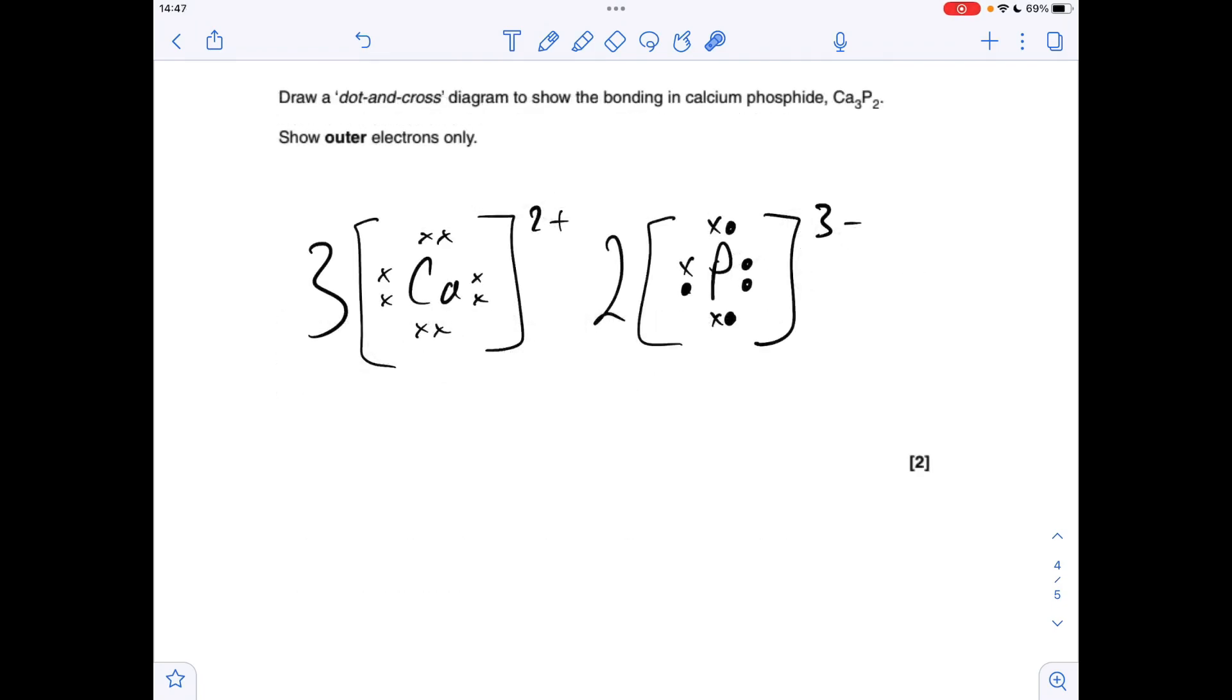The final question, so what's the dot and cross diagram for calcium phosphide going to look like? Well, we need to know what type of bonding it's got. They haven't told us, so we've got to use the fact that we've got metal and non-metal, so it's going to be ionic.